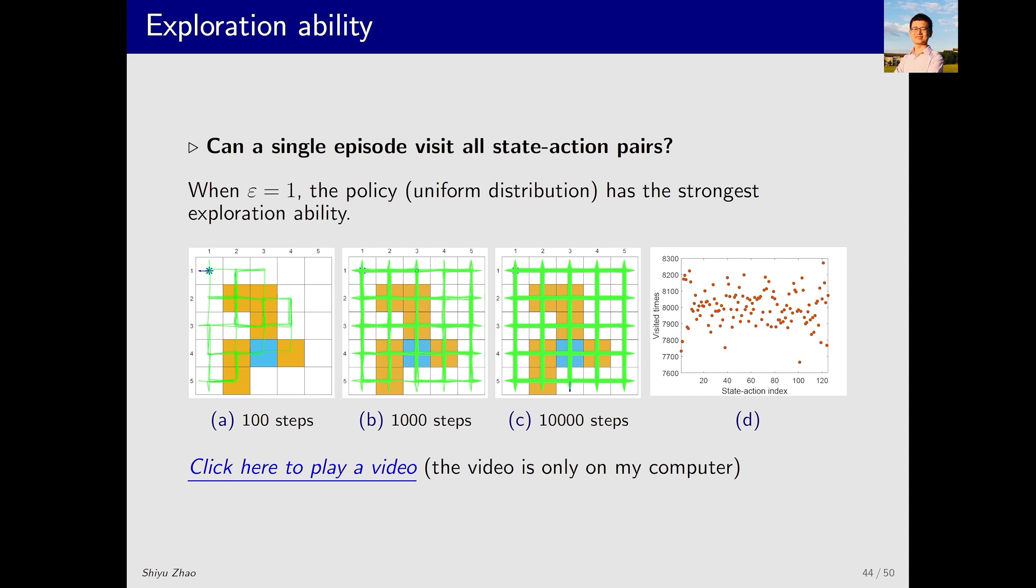First, consider the case where epsilon equals 1, meaning that the policy has the strongest exploration ability. In this case, the policy essentially becomes a uniform distribution. In our example where each state has 5 actions, each action is assigned a probability of 0.2.